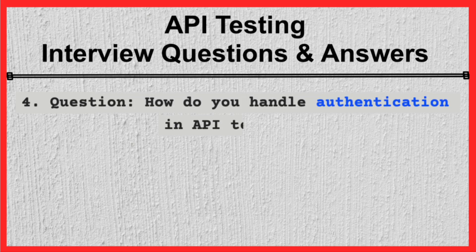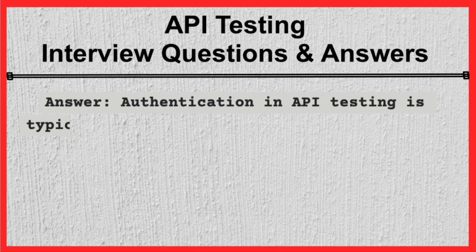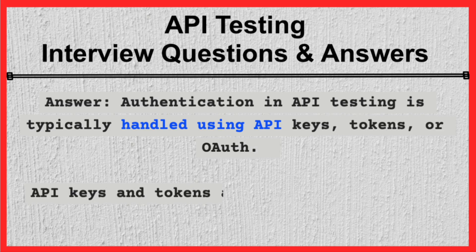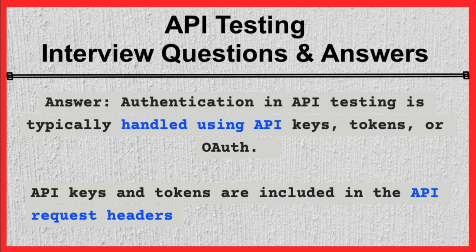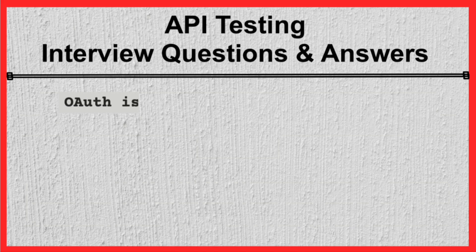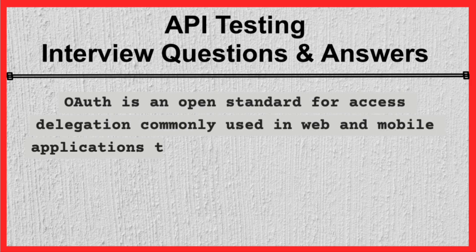Question 4. How do you handle authentication in API testing? Answer. Authentication in API testing is typically handled using API keys, tokens, or OAuth. API keys and tokens are included in the API request headers to validate the identity of the requester. OAuth is an open standard for access delegation commonly used in web and mobile applications to allow secure authorization.